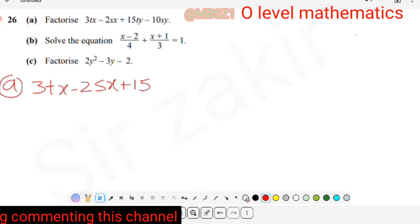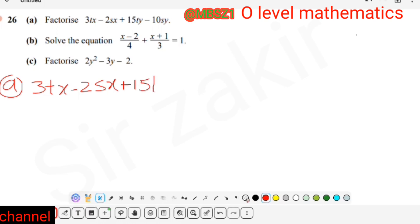First we begin with part A. It is written 3TX - 2SX + 15TY - 10SY. In the first two terms, 3TX minus 2SX, X is the common term. So when we take X common, what is left will be written in bracket: 3T - 2S.